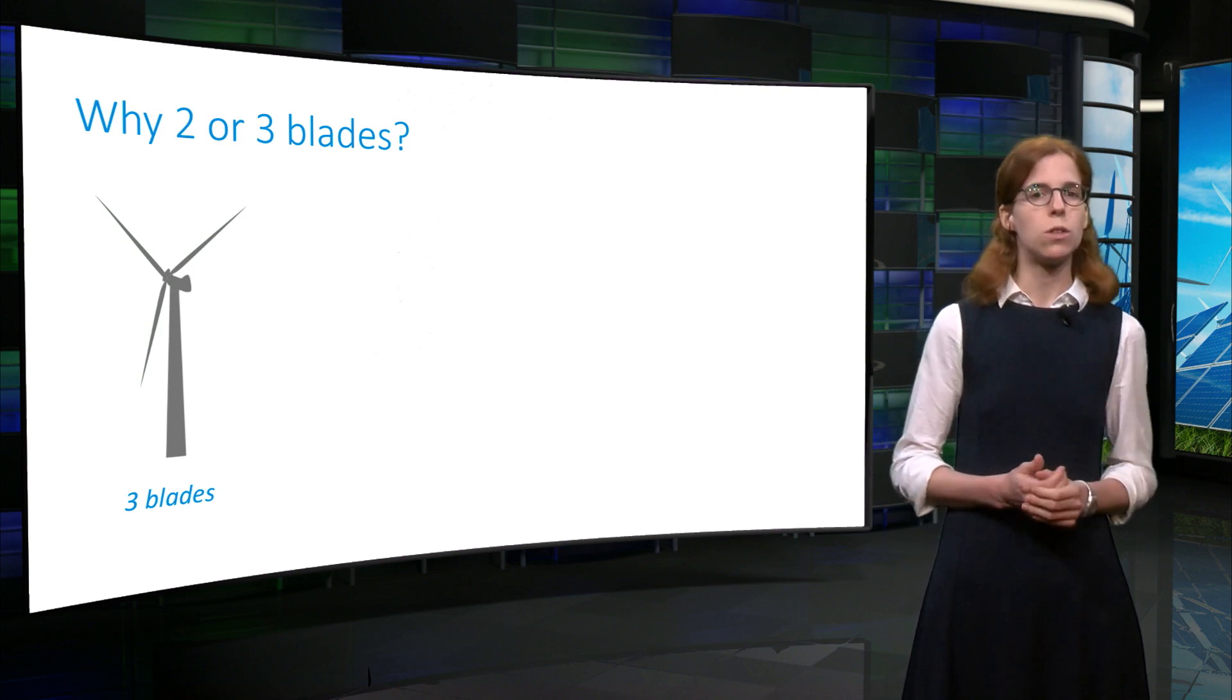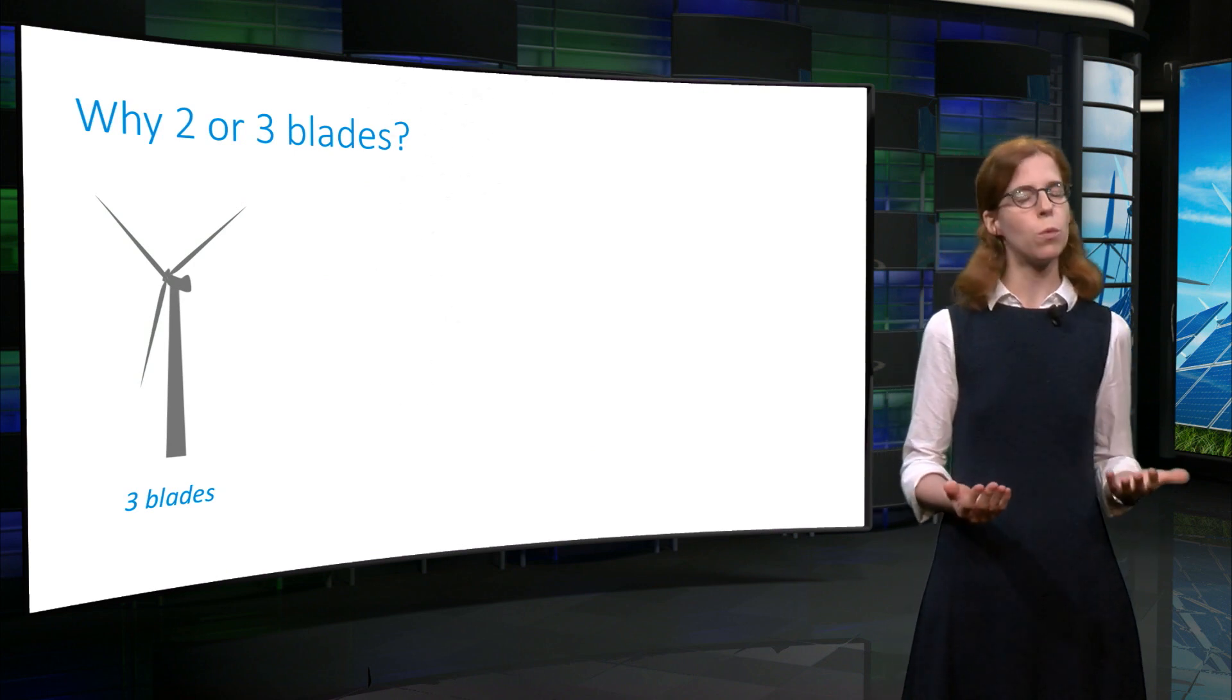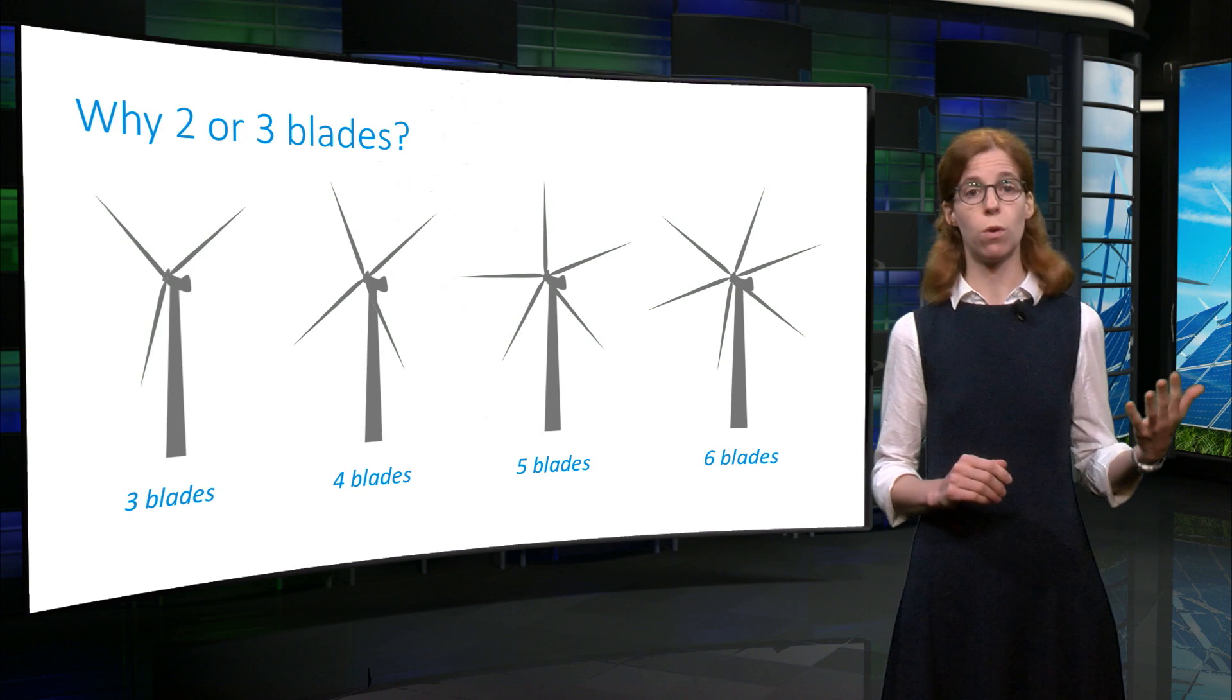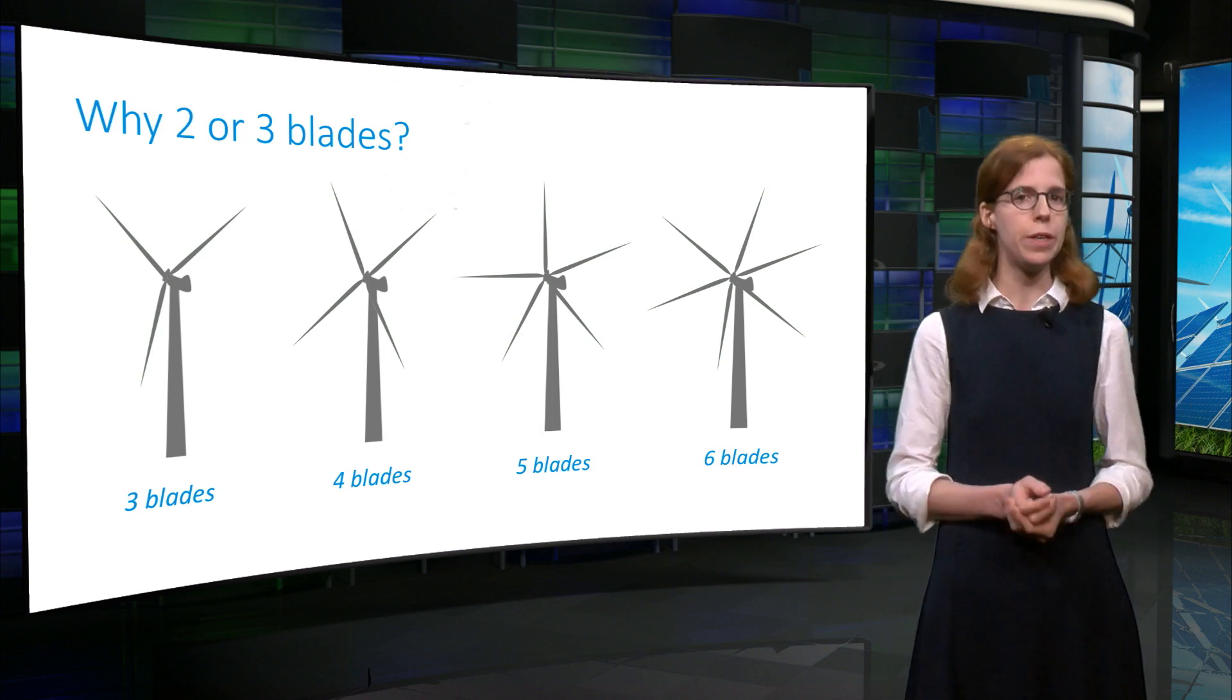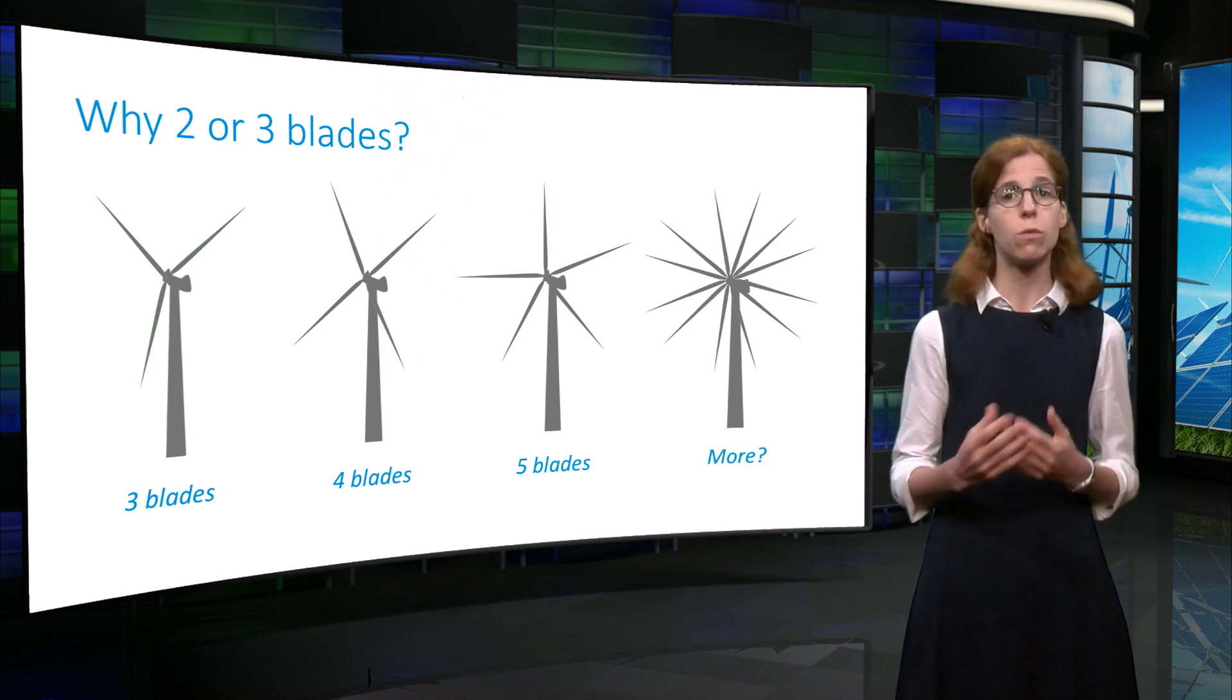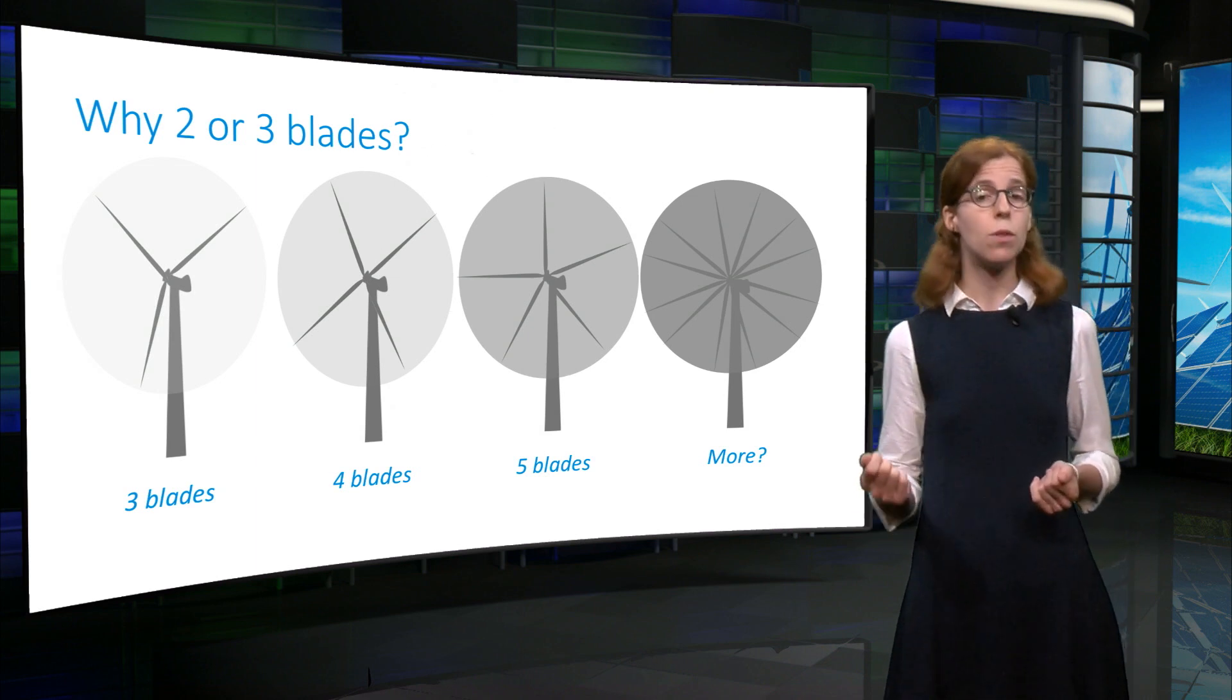I've just mentioned that a wind turbine rotor is composed of usually two or three blades. But why don't we use more blades? Four, five, six or even more? Well, as the number of blades increases, the force on the rotor also increases, but the velocity of the wind going through it decreases. So the higher the number of blades, the higher the blockage of the flow.